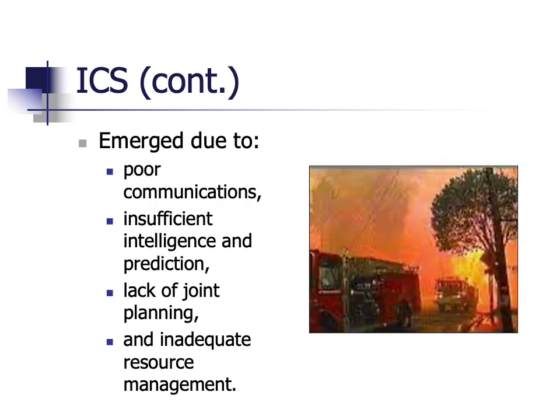ICS emerged as a proposed organizational structure due to fires that affected California in 1970. These fires were very severe and burned for 13 days. They covered more than 500,000 acres, destroyed over 700 structures, and killed 16 people. They taxed the fire departments that were responding to them. An organizational structure named Firescope was created — Firescope stands for Firefighting Resources of Southern California Organized for Potential Emergencies.